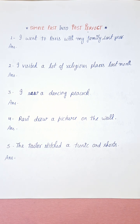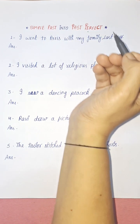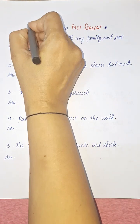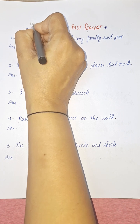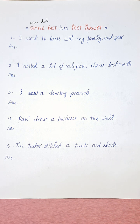Now let's talk about the helping verbs and main verbs of simple past and past perfect tense. Thank you so much for your support and motivation, and for watching my videos. Please keep watching, sharing, and liking. If you are new to my channel, please subscribe and hit the bell button for notifications. So, the helping verb of simple past tense is 'did' — it has only one helping verb.